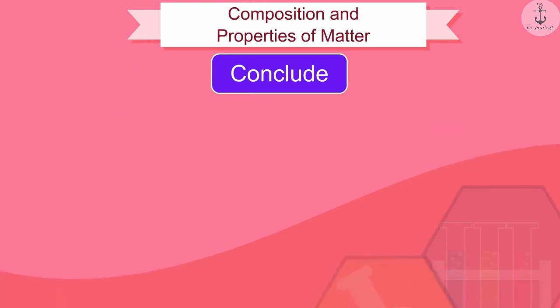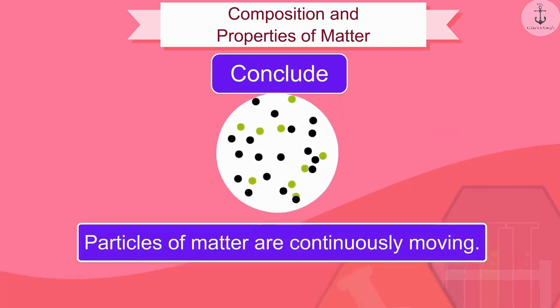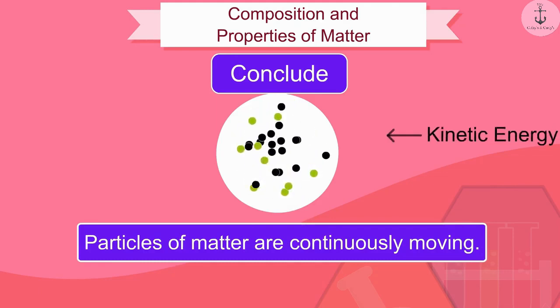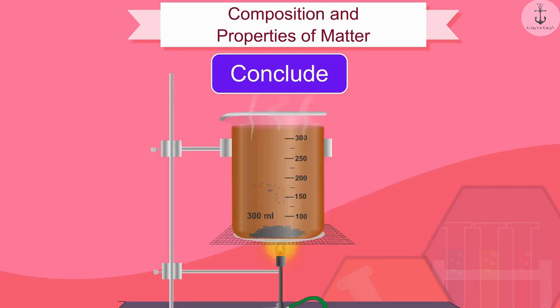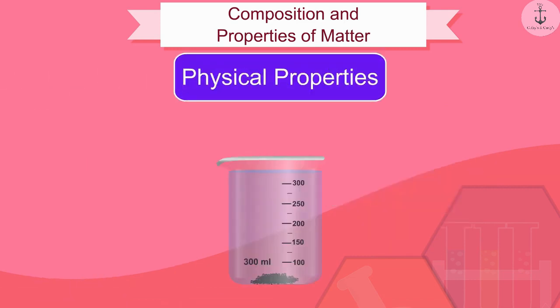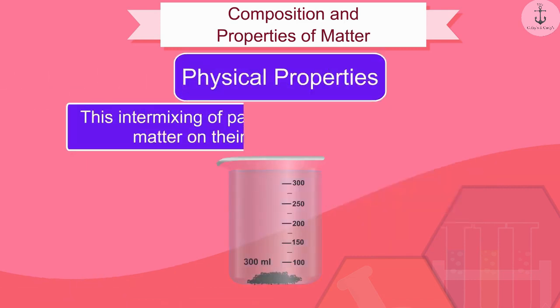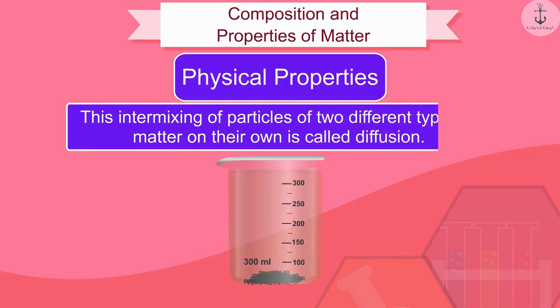In other words, we can say that particles of matter are continuously moving. That is, they have kinetic energy, and this energy increases as the temperature increases. This intermixing of particles of two different types of matter on their own is called diffusion.